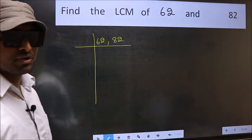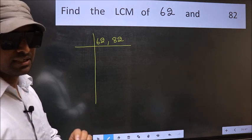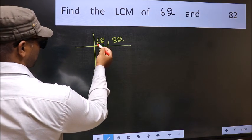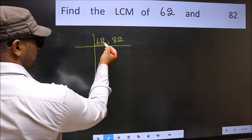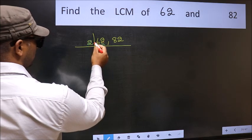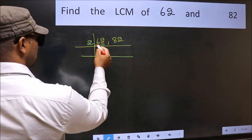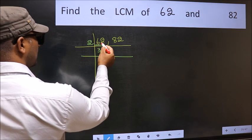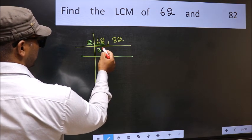Now focus on the first number, which is 62. For this number, last digit is even, so take 2. First number is 6. When do we get 6 in 2's table? 2 times 3 is 6. The other number is 2. When do we get 2 in 2's table? 2 times 1 is 2.